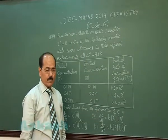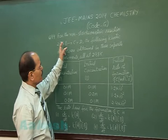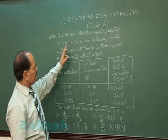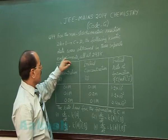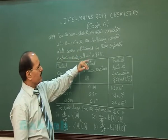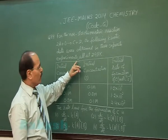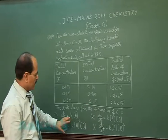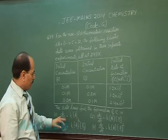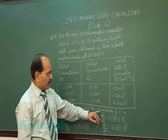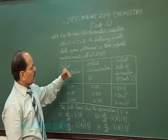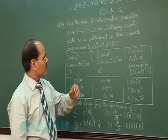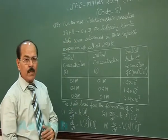Question number 84 says for the non-stoichiometric reaction 2A plus B gives C plus D, the following kinetic data were obtained in three separate experiments, all at 298 Kelvin. This is the data given and four options are given for the rate law for the formation of C. Suppose the order of reaction with respect to A is X and order of reaction with respect to B is Y.